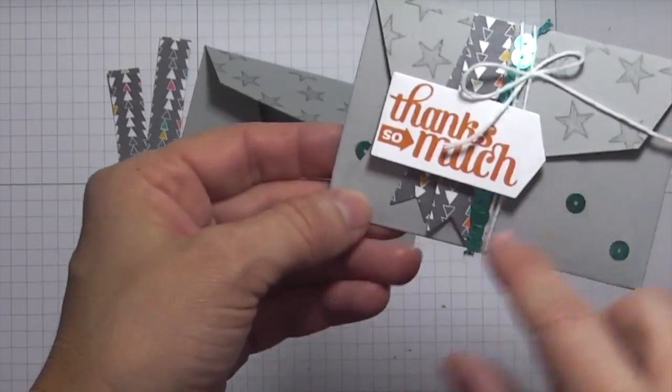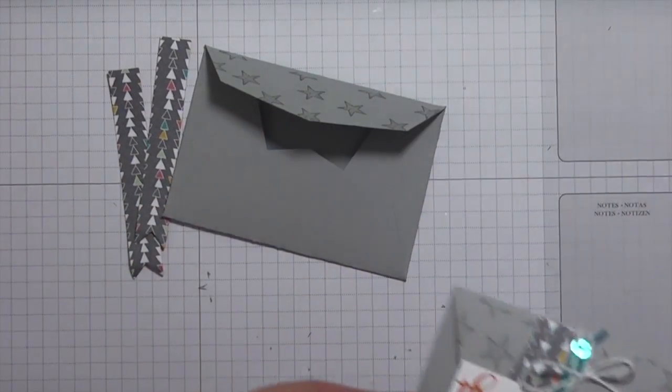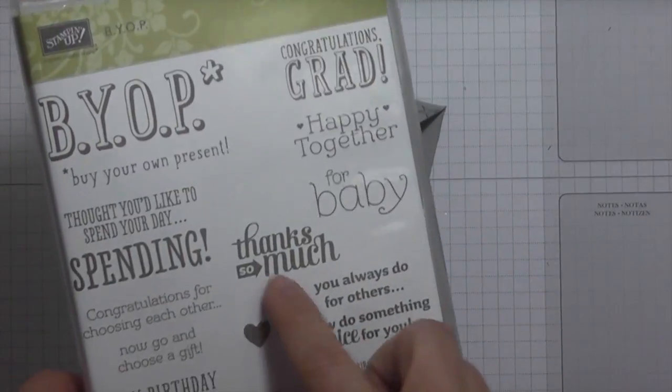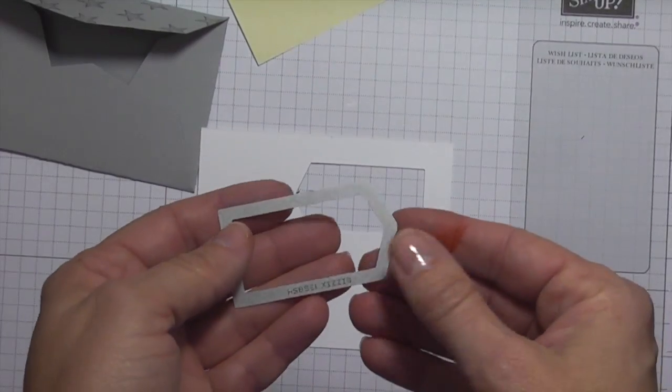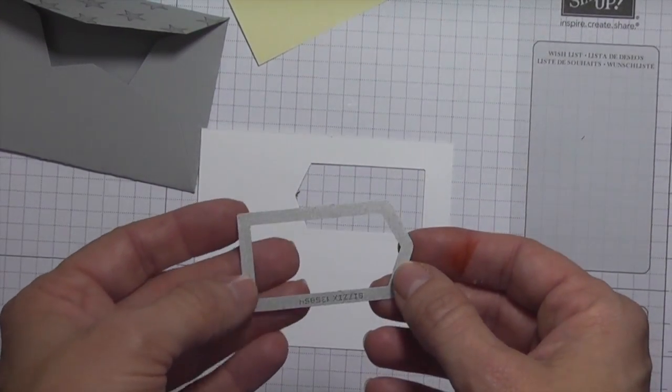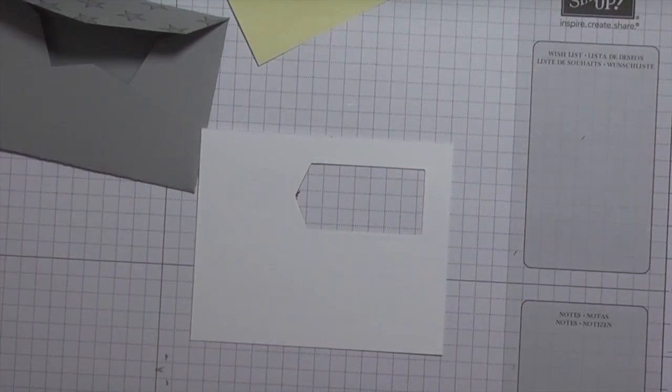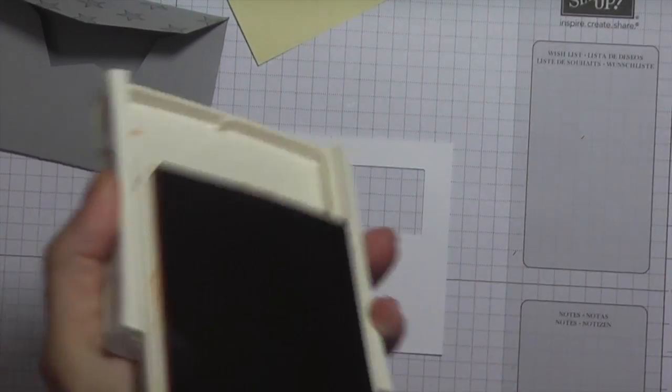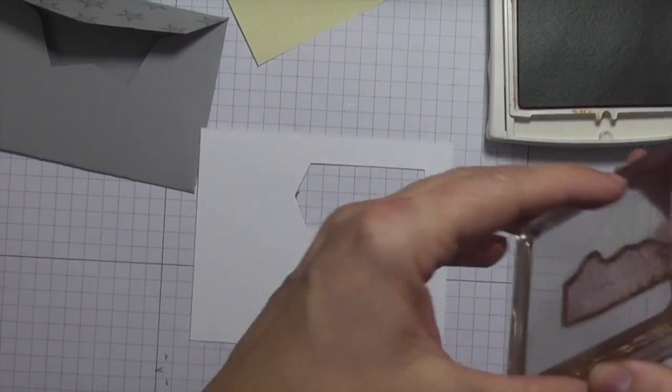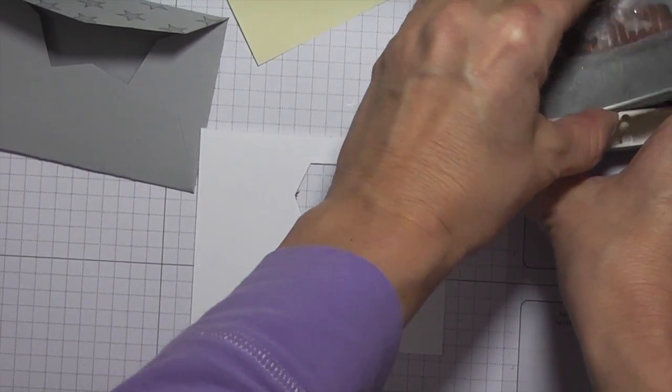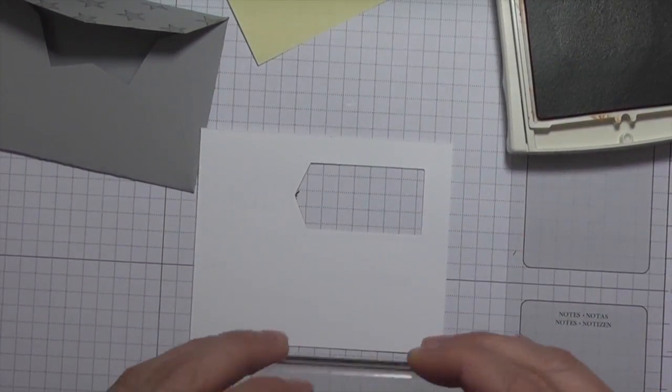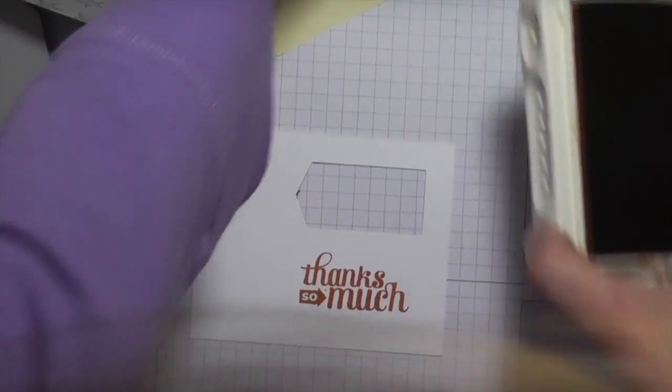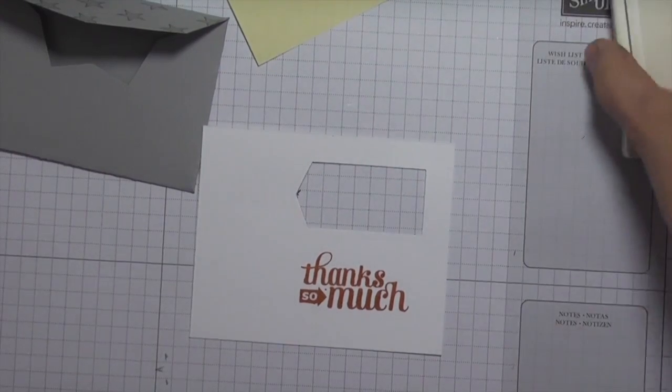The next thing we're going to do is this stamping. The thanks so much comes from the BYOP stamp set. I'm going to use another part of the gift card dies, this other little banner piece. I'm going to stamp this in tangelo twist. All these colors that I'm using are coming from the designer series paper. I love that the colors are already chosen for me, so it takes that guesswork out.